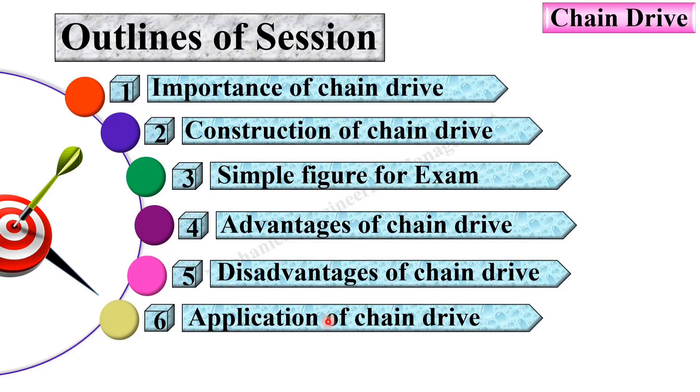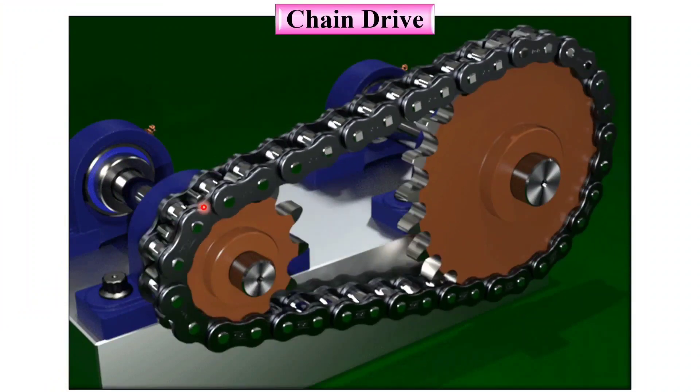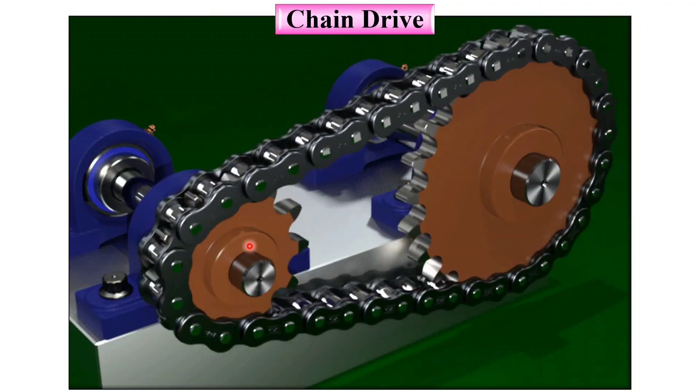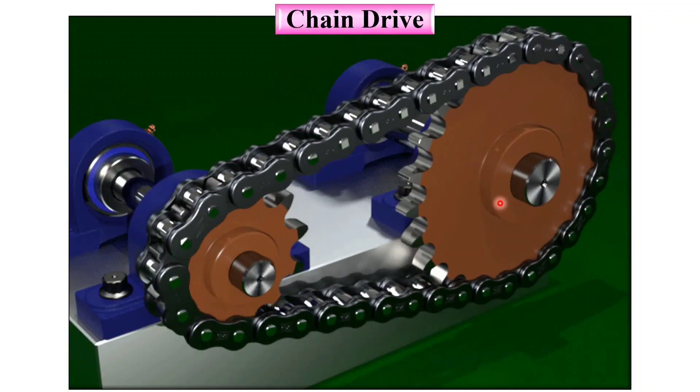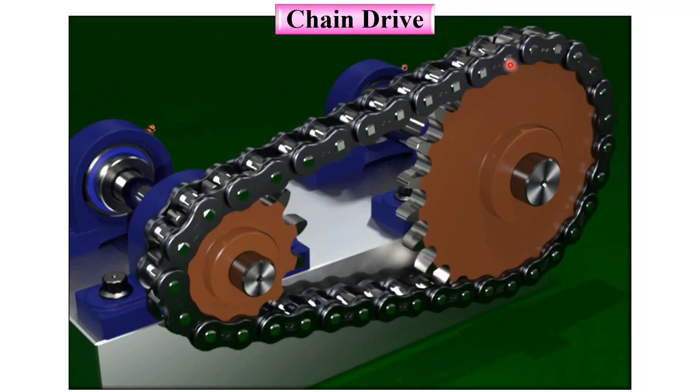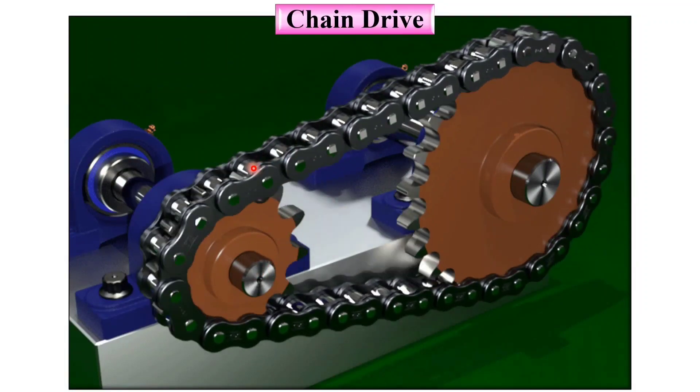So here you can see this is the chain drive. This is the sprocket on the driving shaft and this is the sprocket on the driven shaft and this one is the chain. Here the power is transmitted with the help of the sprocket and the chain.